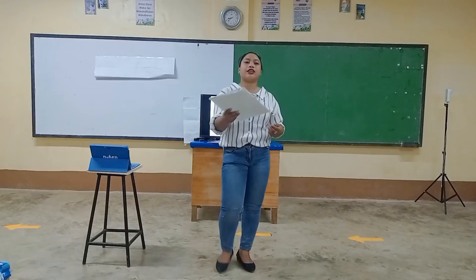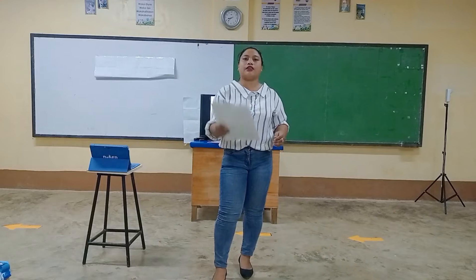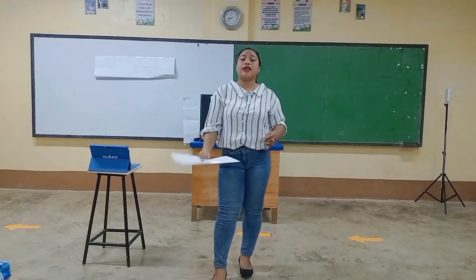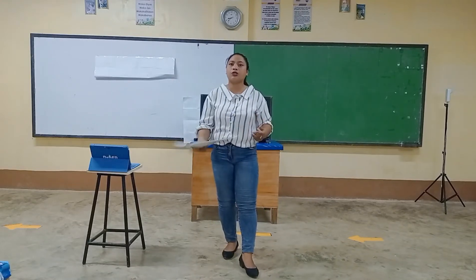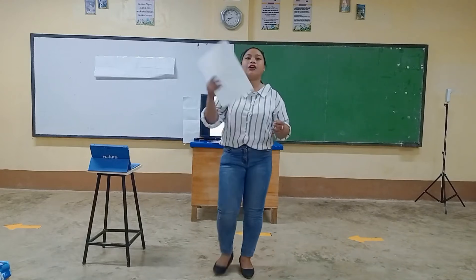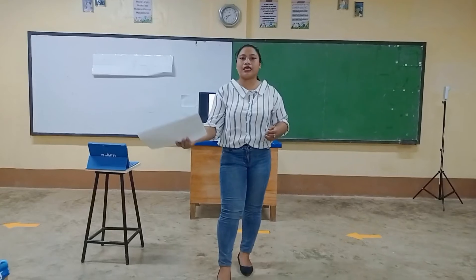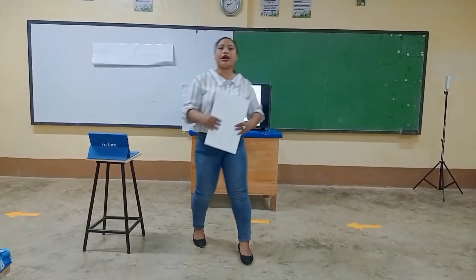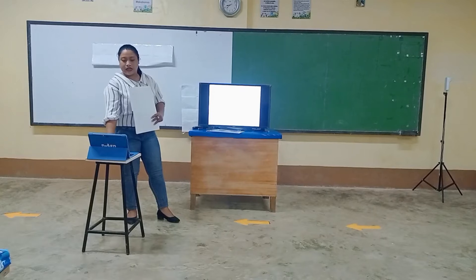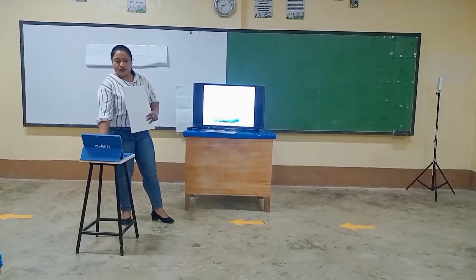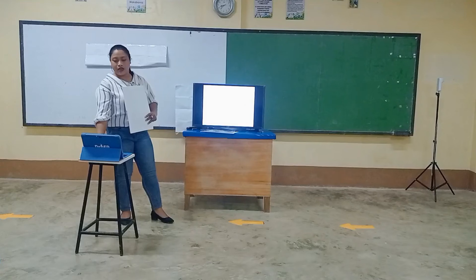Why is it, class, that we need to know or understand the relationship of food chain and food web in the food pyramid? Anyone? Yes, Angelica? Thank you, very good. The aim of the food chain or food web, class, is that it represents the flow of energy. It shows or allows us to know the direction of energy as it is transferred from one organism to another.